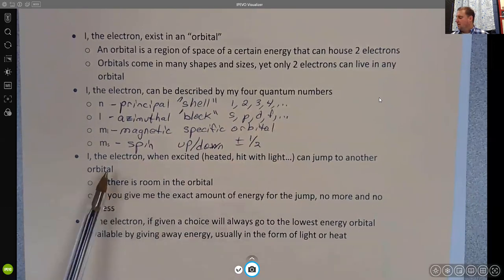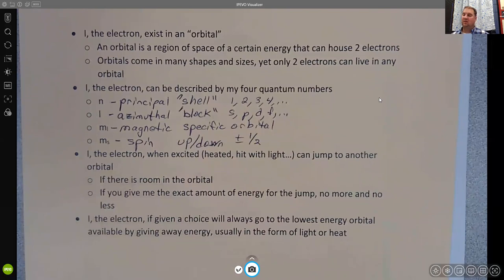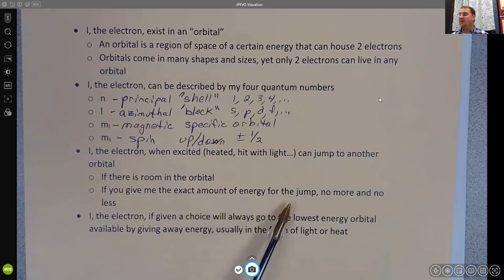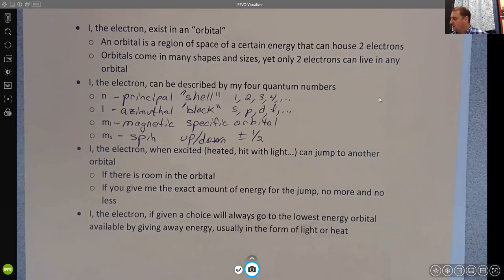The other thing I might tell you about myself, I, the electron, when excited, and that excitation could come from heat or electricity or being hit by light, can jump to another orbital. And that jump happens if there is room in the orbital. So if the other orbital is full, I, as the electron, cannot move into that space. There has to be a space where I can go, even if I have the right amount of energy to go up there. And that's the second piece. I have to have the exact amount of energy for the jump. No more and no less.